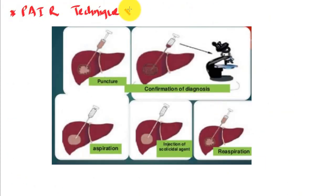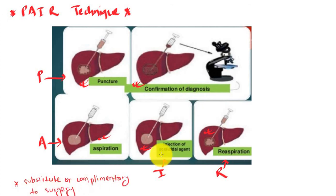Another technique is PAIR technique. P stands for puncture, A for aspiration, I for injection, and R for re-aspiration. We puncture, aspirate, inject, and then again re-aspirate. It is a substitute or complementary to surgery.